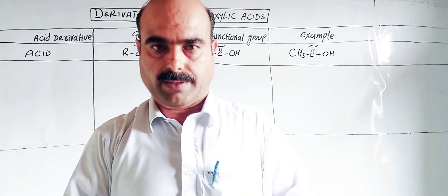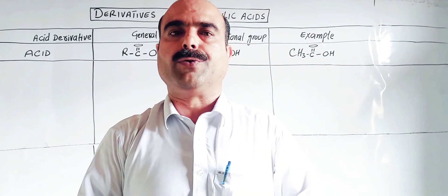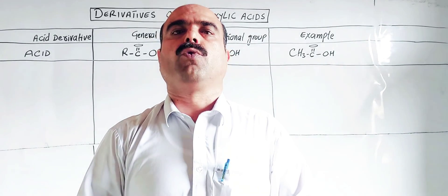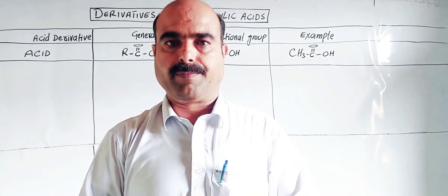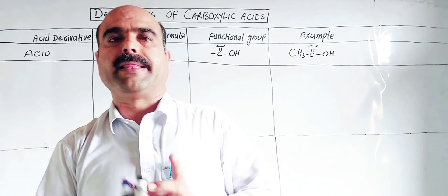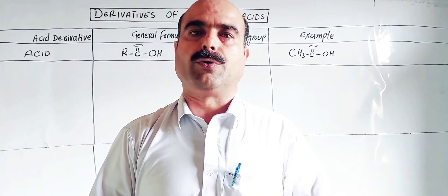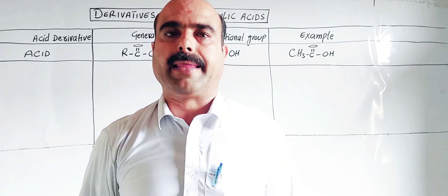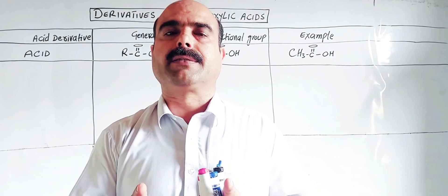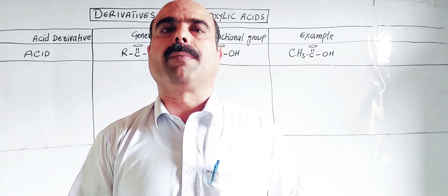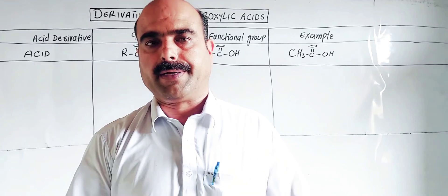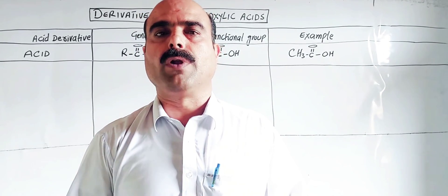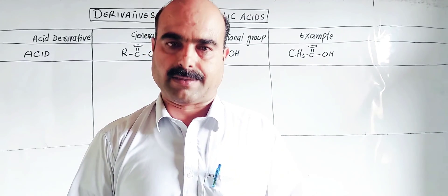Bismillahirrahmanirrahim. Dear students, assalamu alaikum. I am Nasib Zada and you are watching my YouTube channel Nasib Zada Triple S. Welcome to all of you. I hope you are in the best of health and enjoying your studies. Today I have a new and important topic: derivatives of carboxylic acids — their general formula, their functional group, and their examples.